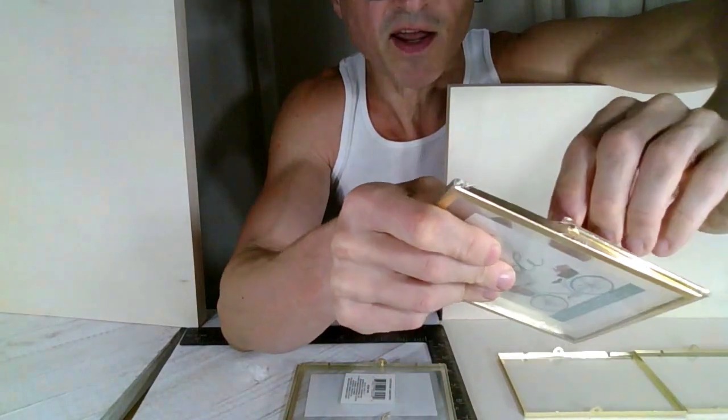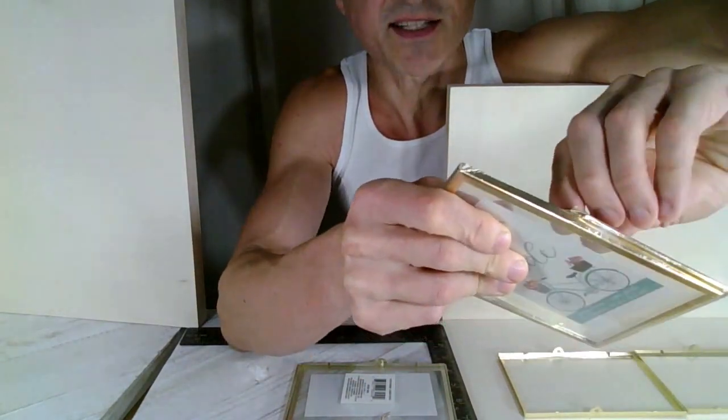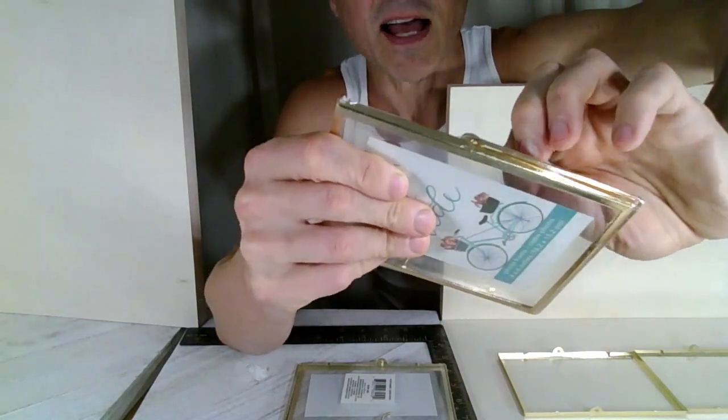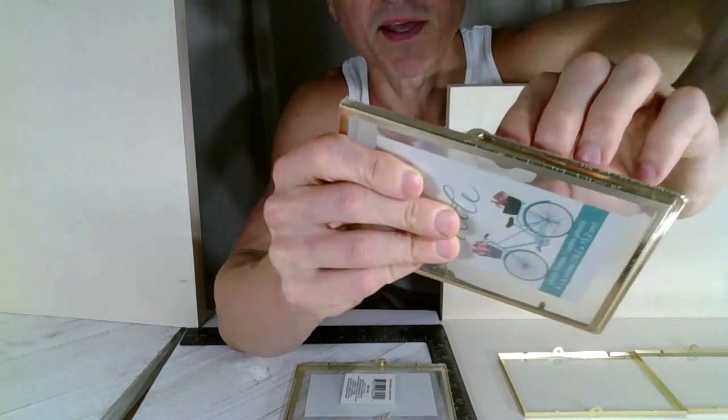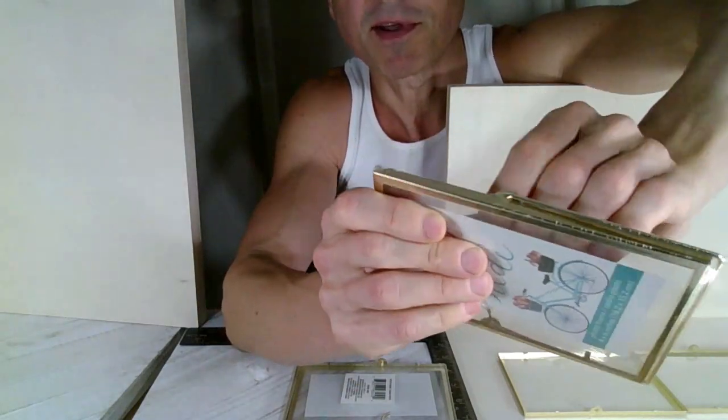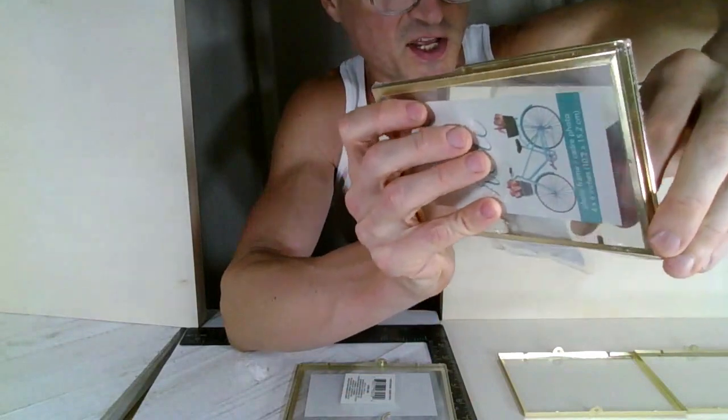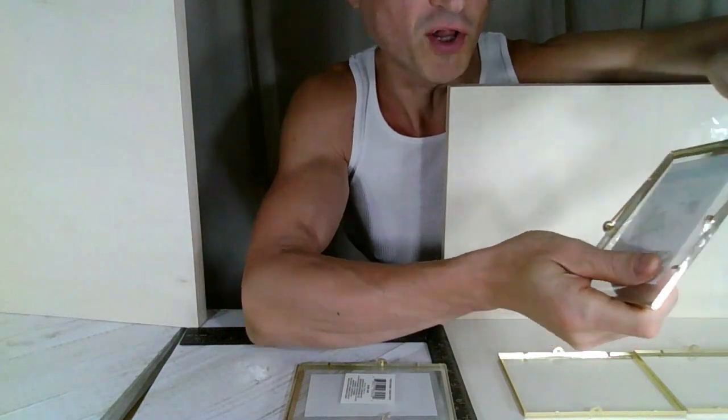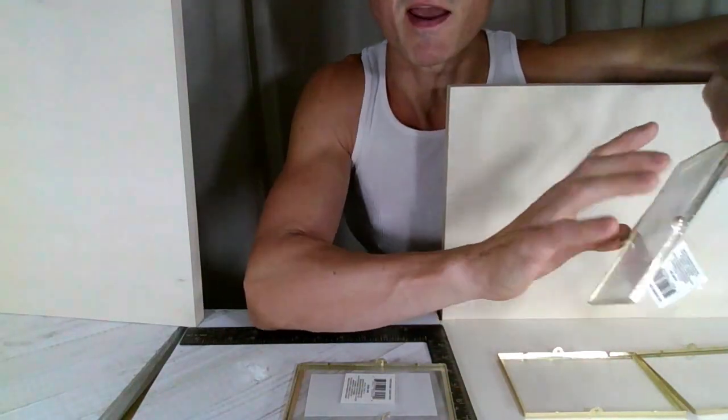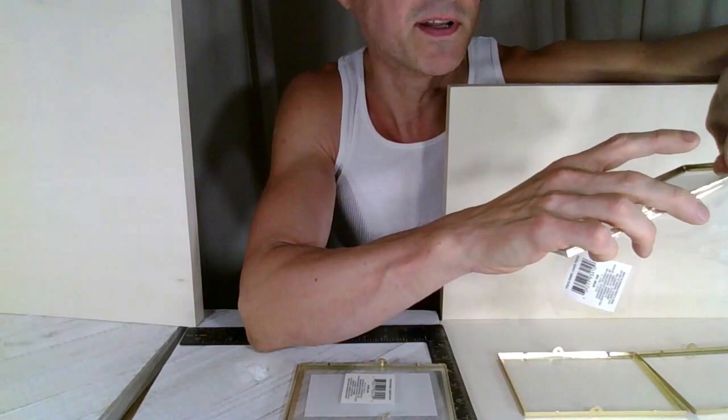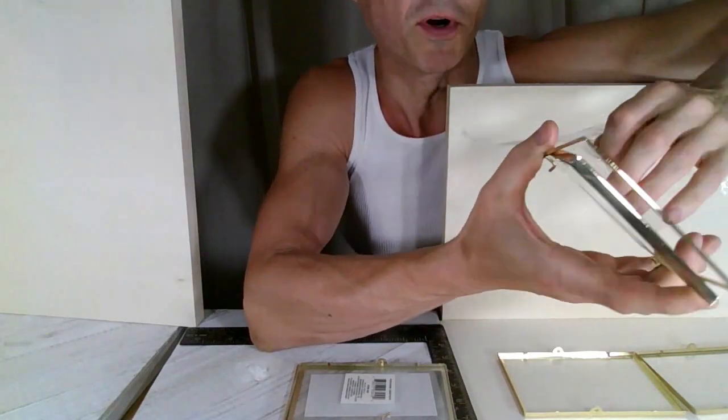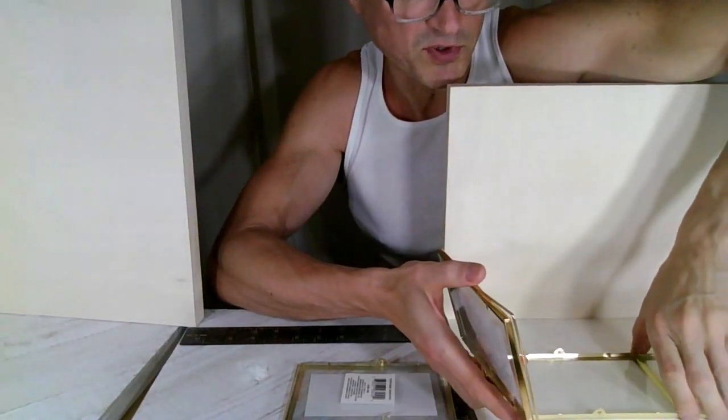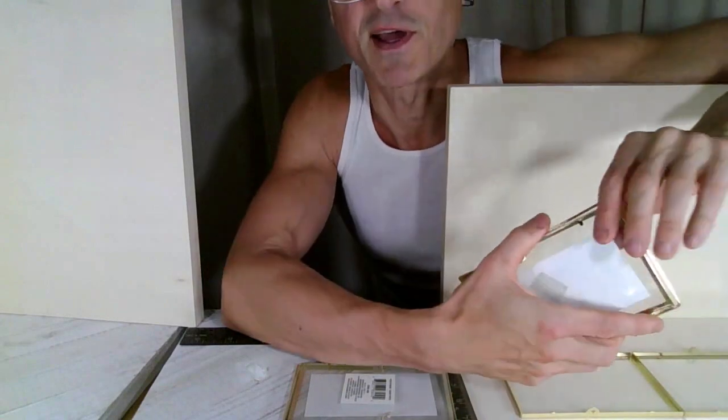So when I went looking for these frames, I was just going to get any frame. I was going to find the cheapest frame possible that had real glass inside. It was important to me that it was real glass. You can use box packaging. You can just build popsicle stick frames or any kind of wood, balsa wood or any kind of crafting wood.